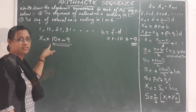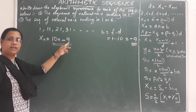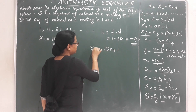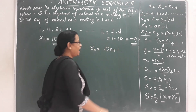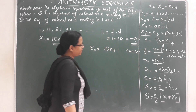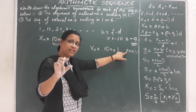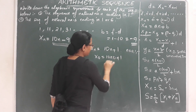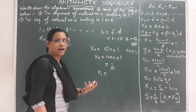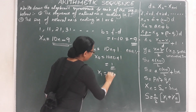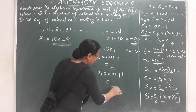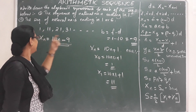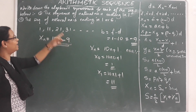So 10n minus 9 is the algebraic expression for this sequence. Some might say it is 10n plus 1, but that uses n starting from 0 — where x0 equals 10 times 0 plus 1, which is 1. If the position starts at 1, then x1 equals 10 times 1 plus 1, which is 11. That would skip the number 1, so the correct algebraic expression with position starting at 1 is 10n minus 9.